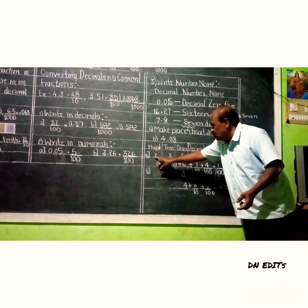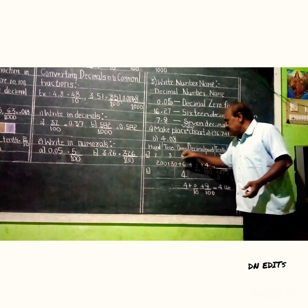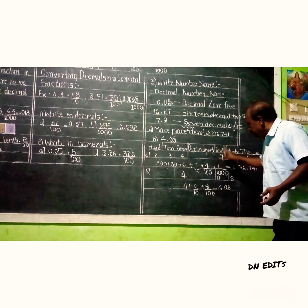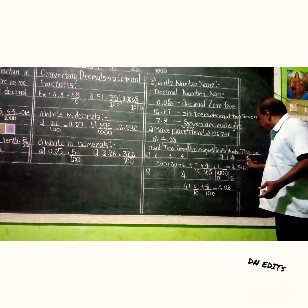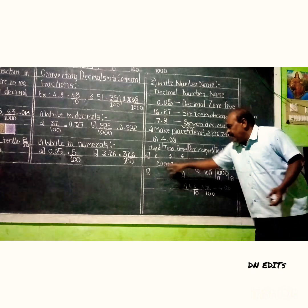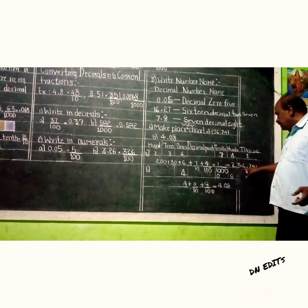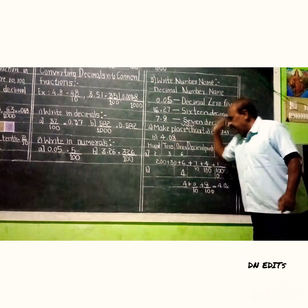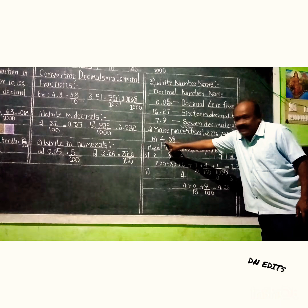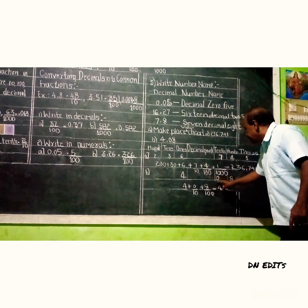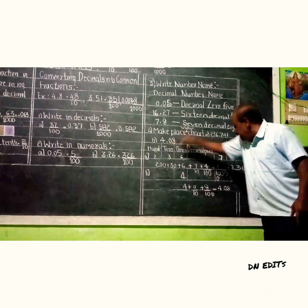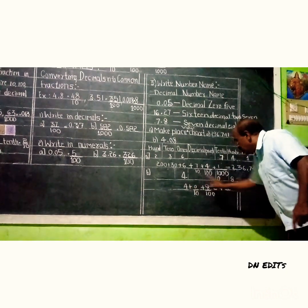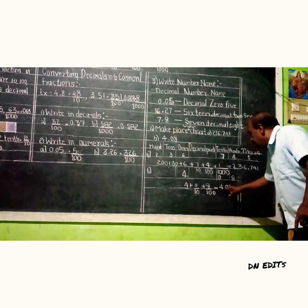So 236.741 means: 100 times 2 is 200, 10 times 3 is 30, 1 times 6 is 6, totalling 236; plus 7 by 10, plus 4 by 100, plus 1 by 1000 — giving a total of 236.741. For 4.08: 4 is in the ones place, then decimal point, 0 is in the tenths place, and 8 is in the hundredths place — so 4 plus 0 by 10 plus 8 by 100 equals 4.08.